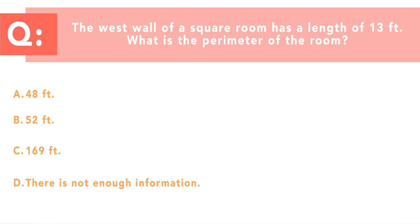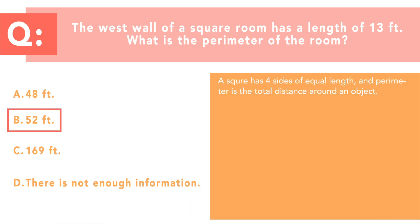The correct answer is 52 feet. A square has four sides of equal length. So the perimeter is the total distance around an object. So to find the perimeter of a square, just follow the formula, p equals 4s, or p is the perimeter and s is the length of a side. In this case, p equals 4 times 13, which is 52 feet.